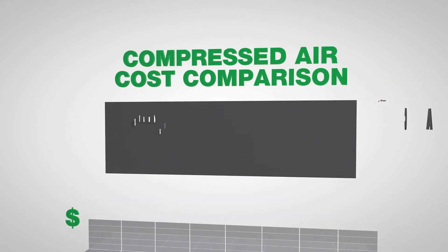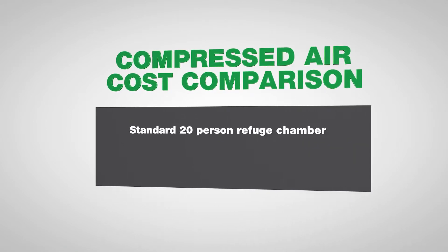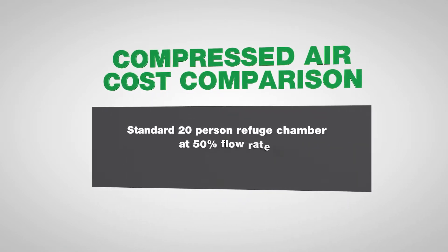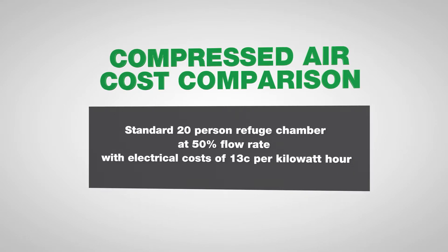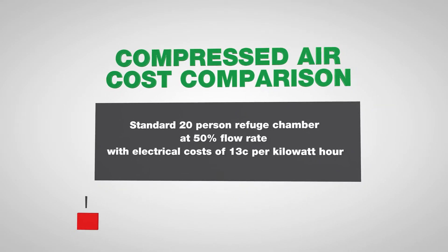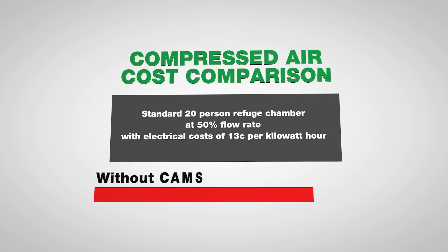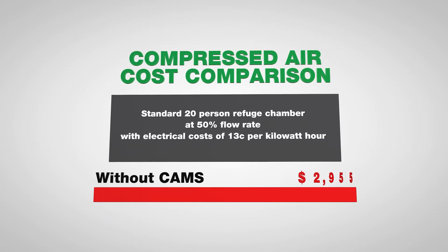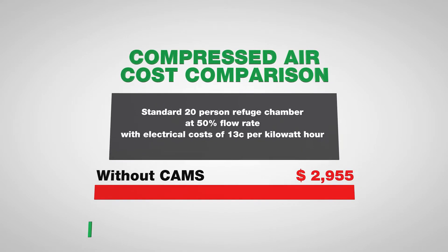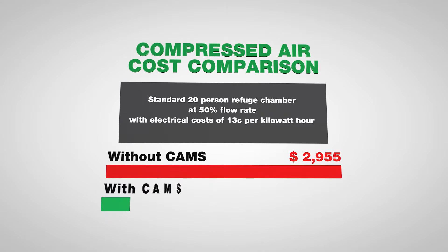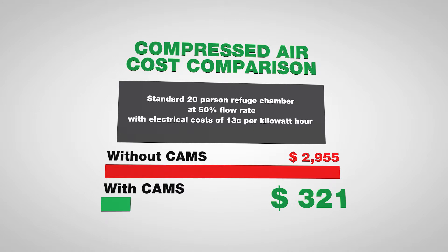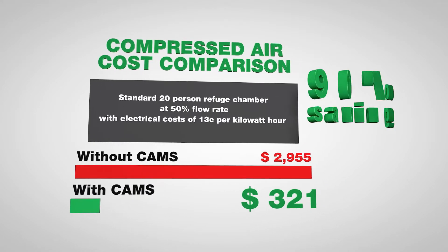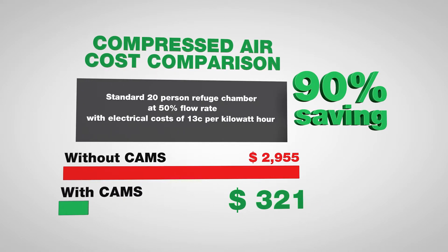For example, a standard 20-person refuge chamber operating at a 50% flow rate and with an electrical cost of 13 cents per kilowatt can see a cost of $2,955 per annum. With the use of CAMS, this same chamber's running costs would be reduced to $321, resulting in an impressive 90% savings.